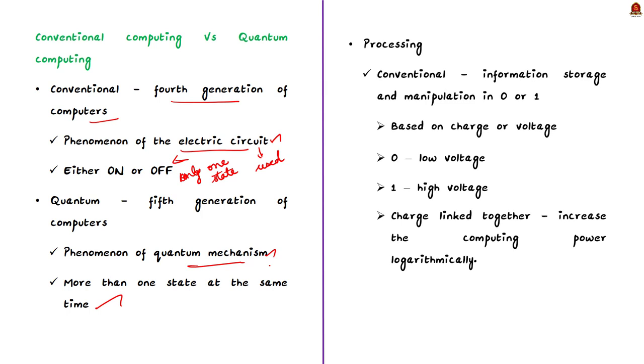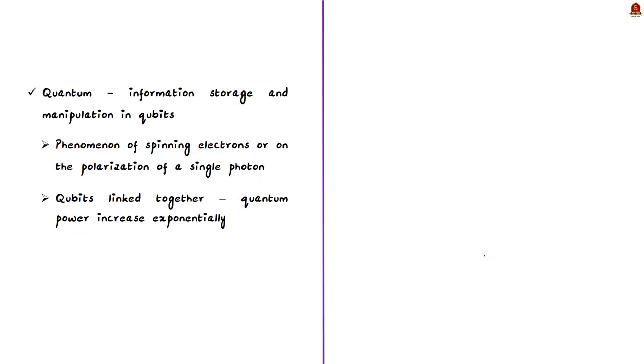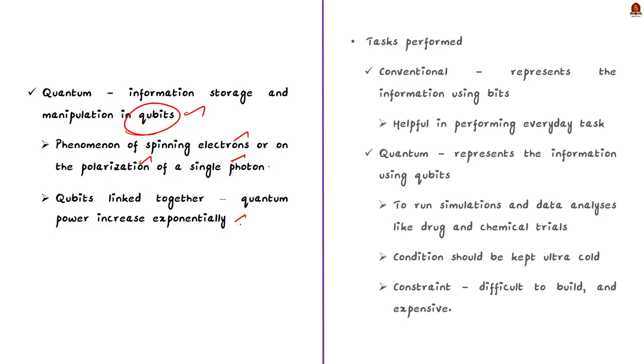The next difference is about the processing. With the help of bit, that is 0 or 1, the information storage and manipulation are done in conventional computing. The bit is further based on charge or voltage. If the number of charges is linked together, it will only increase in the computing power. Now in the quantum computers, information storage and manipulation are done with the help of qubit or quantum bit. The qubit is further based on the phenomenon of spinning electrons or on the polarization of single photon. The power of quantum computing will be exponentially increased if number of qubits are linked together.